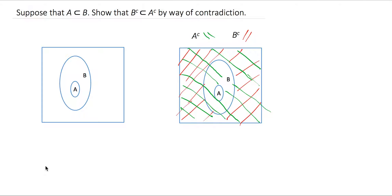Suppose that A is a subset of B. Show that B complement is a subset of A complement by way of contradiction.